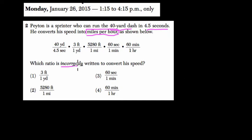Now, if you look at all the ratios, 40 yards for 4.5 seconds, that ratio in of itself is correct. In fact, they all are. There are 3 feet for every yard. There are 5,280 feet for every mile and 60 seconds per minute and 60 minutes per hour. But one of these ratios, even though they're all correct in terms of the units, the order that it's written in will not lead to the answer in miles per hour. Let me show you what I mean.